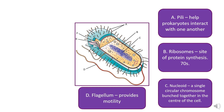The flagellum looks like a tail and provides motility, allowing the prokaryote to move around. However, you cannot use this as a difference between prokaryotic and eukaryotic cells, because flagella are also found on sperm cells. So don't state that prokaryotes have flagella and eukaryotes exclusively do not — that's incorrect.